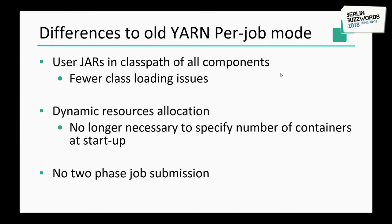What are the differences to the previous situation in per-job mode? Now the JARs are in the classpath of all components, which reduces class loading issues. The second and maybe even bigger point is dynamic resource allocation — we no longer need to specify how many containers we need at startup. You say your job has parallelism 20, and it will ask for that many task managers. And there is no two-phase job submission anymore — before, you had to spawn everything and poll to ask if the cluster was running, which was error-prone.